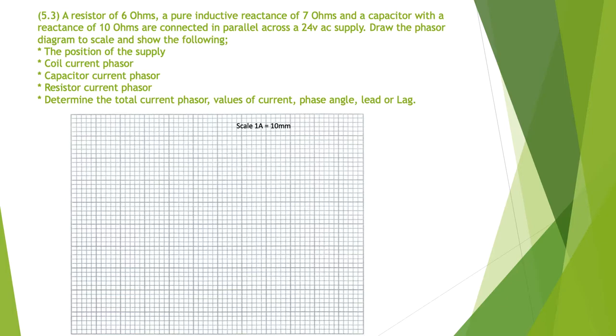My scale is 1 amp equals 10 millimetres. First I'm going to put on my voltage reference and my current through the resistor. The current through the resistor is 24 divided by 6, gives me 4 amps at 0 degrees because it's a resistor. It stays in phase with the voltage.